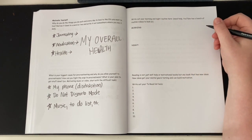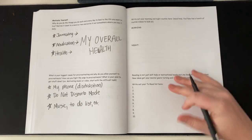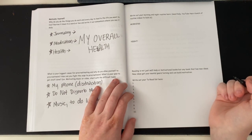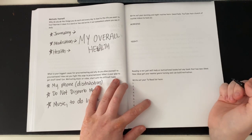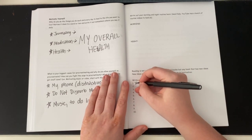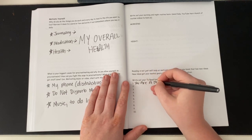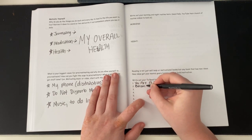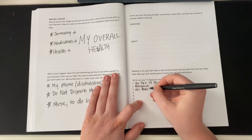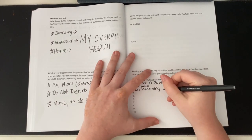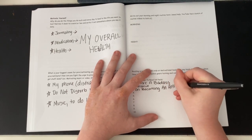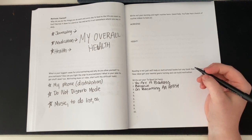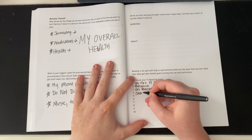Write out your morning and night routine here. I pretty much know my morning and night routine and you guys pretty much know so I really don't have to write that down. My to read list: reading is not just self help or motivational but any book that has new ideas. New ideas get your mental gears turning and can build motivation. So the current book I'm reading is You Are a Badass by Jen Sincero. I also want to read my balance book, On Becoming an Artist. I'm just thinking of all the books on my shelves that I really want to get to this summer. Shadows Before Dawn, I'm going to write down those.